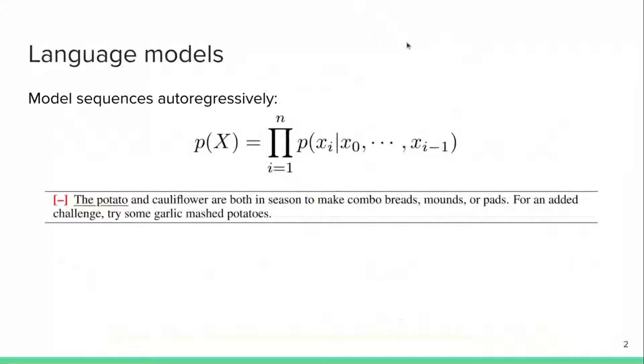First of all, to give you a bit of background, the paper is about language models. Language models model sequences of text autoregressively. So let's say you have some context x, and the way language models work is you try to predict the next word given the history.